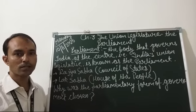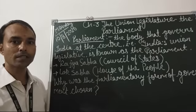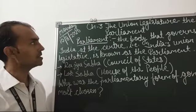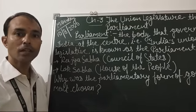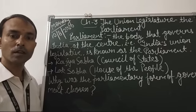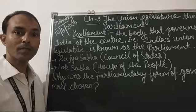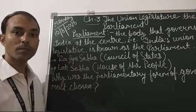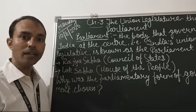Good morning, students. Welcome back to social studies tutorial. In today's session, we are going to start a new chapter of civics — Chapter 3: The Union Legislature, the Parliament. First, let's recall the last chapter on the ideas of the Indian Constitution, where we talked about what exactly the Constitution is and some of its key features, including fundamental rights, fundamental duties, and the federal structure of government, as well as the parliamentary form of government.